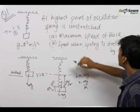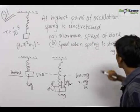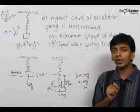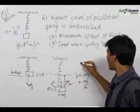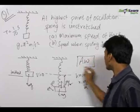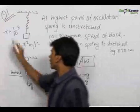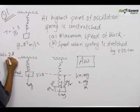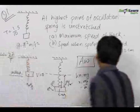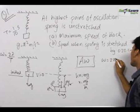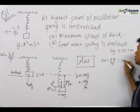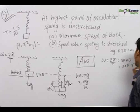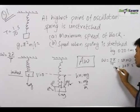We need to find the maximum speed of the block. The maximum speed comes at the equilibrium position and its magnitude is equal to A times omega. Omega is equal to 2π by T, which equals 2π times 10, equal to 20π inverse seconds.